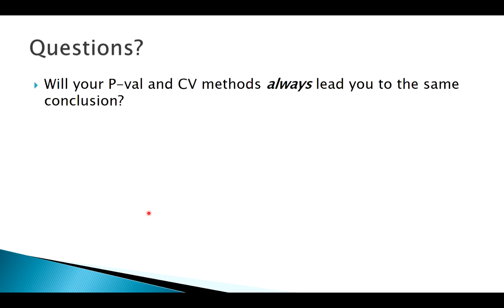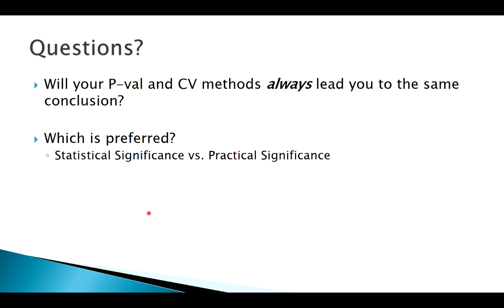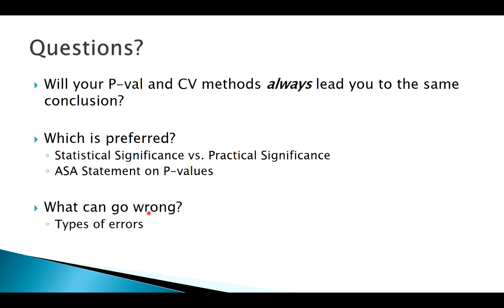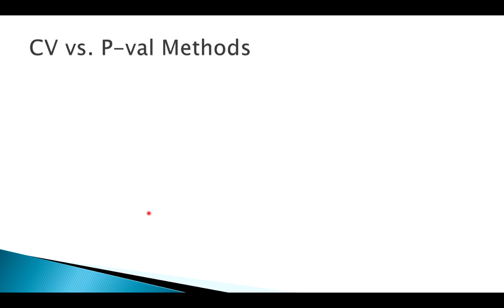A key question is: when making our decision, there are two different methods — the p-value method or the critical value method. Which one is preferred, and will they always lead us to the same conclusion? We'll answer that, look at statistical significance versus practical significance, the American Statistical Association's views on that, and what ways we could get the test wrong and how to quantify it.